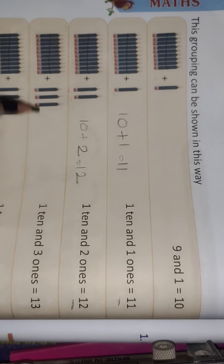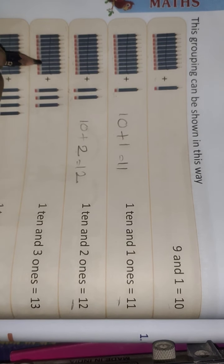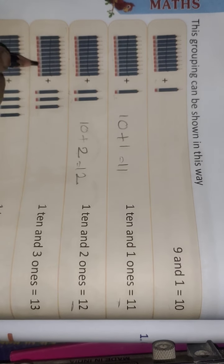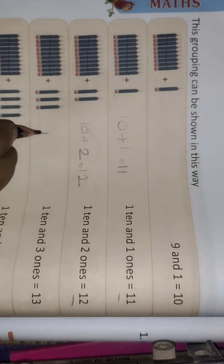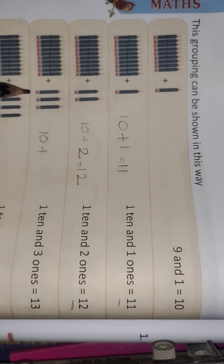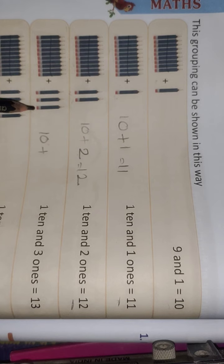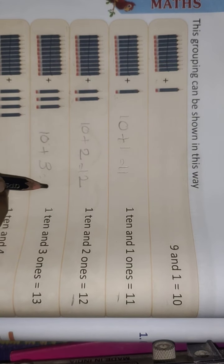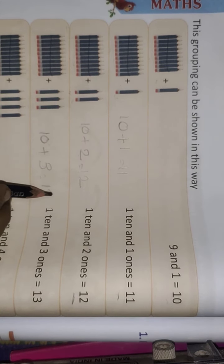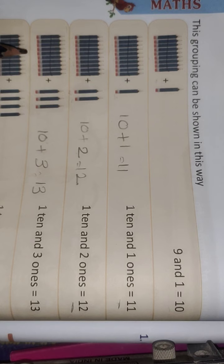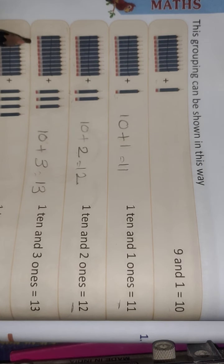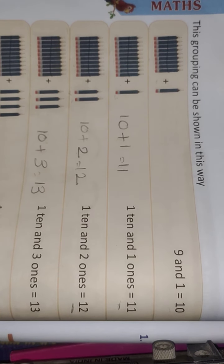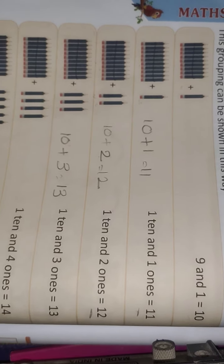Next — 10 pencils, this is a group or a bundle. Plus how many spare objects? 3. 10 plus 3 — 1 ten and 3 ones equals 13.